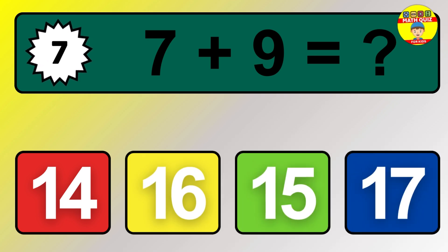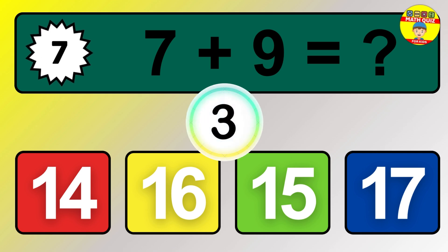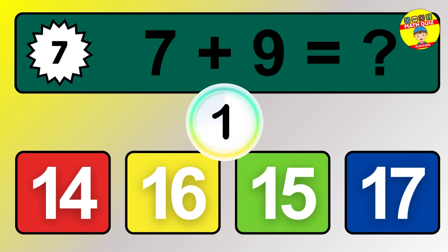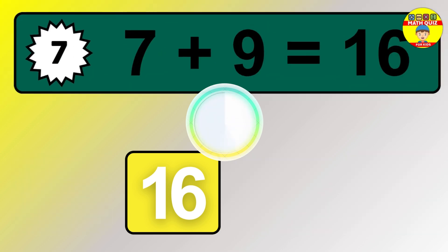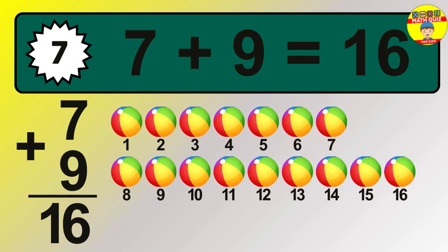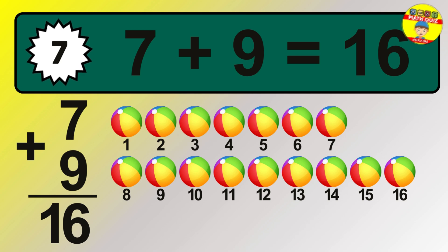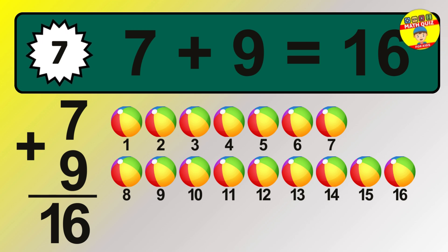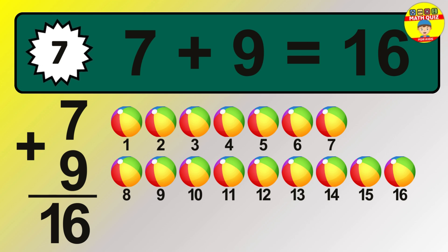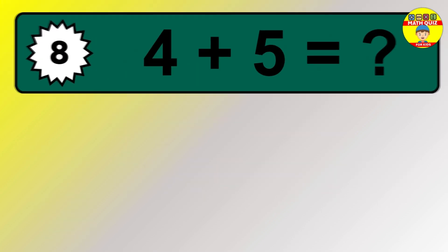Question 7. 7 plus 9 equals what? So the answer is 7 plus 9 is 16. Let's count it. 1, 2, 3, 4, 5, 6, 7, 8, 9, 10, 11, 12, 13, 14, 15, 16.